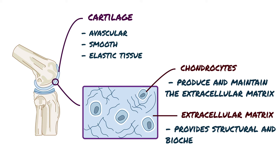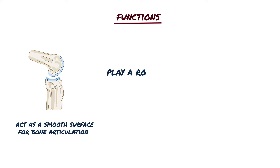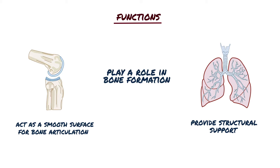So what are the functions of cartilage? It can act as a smooth surface for bone articulation within joints, play a role in bone formation, and also provide structural support, such as the cartilage rings in the trachea.